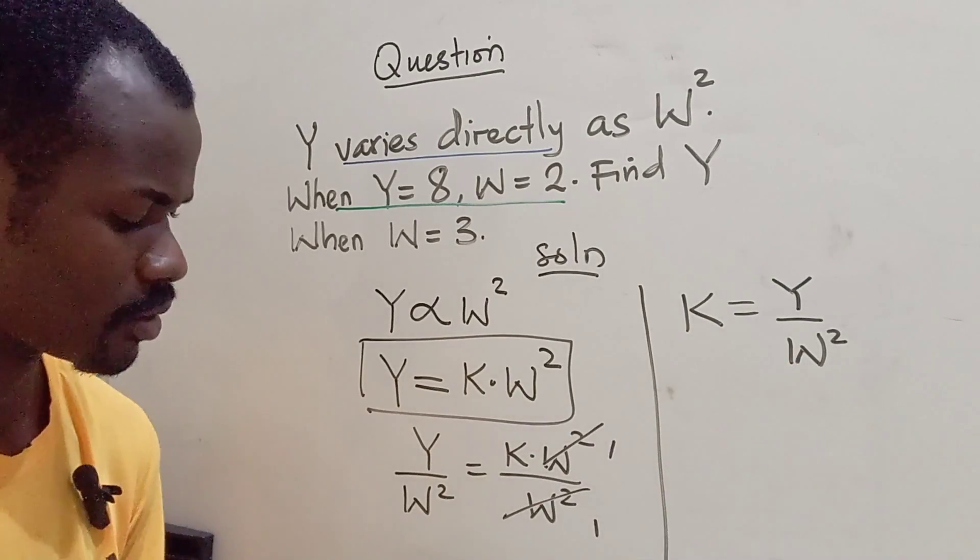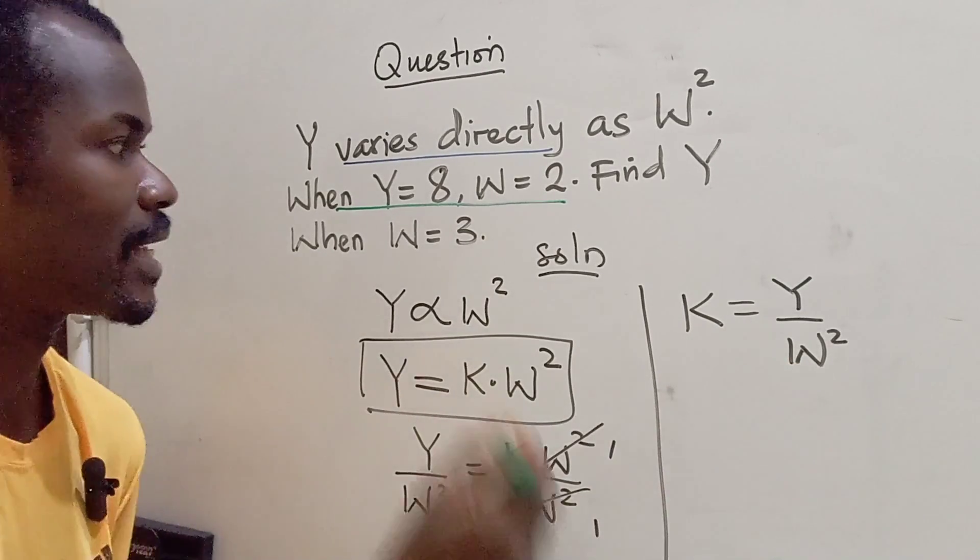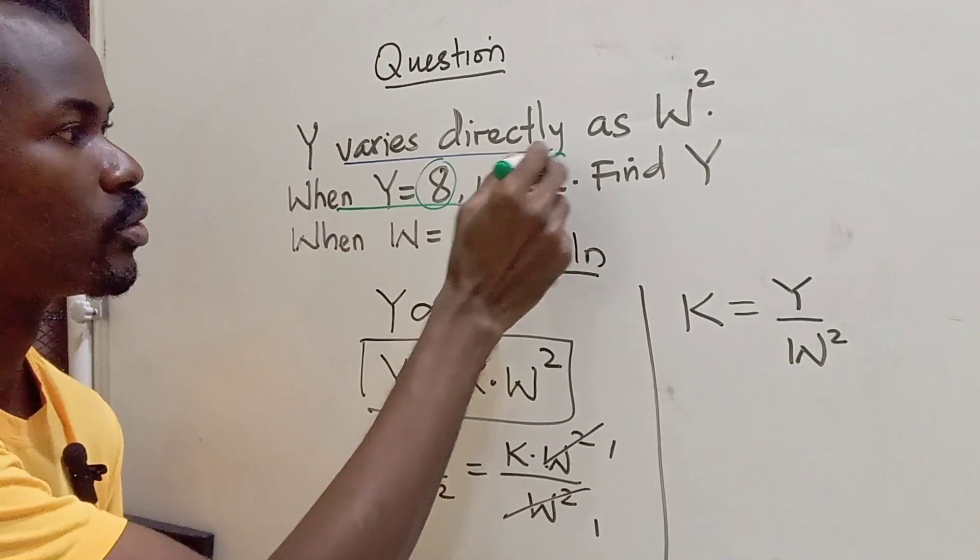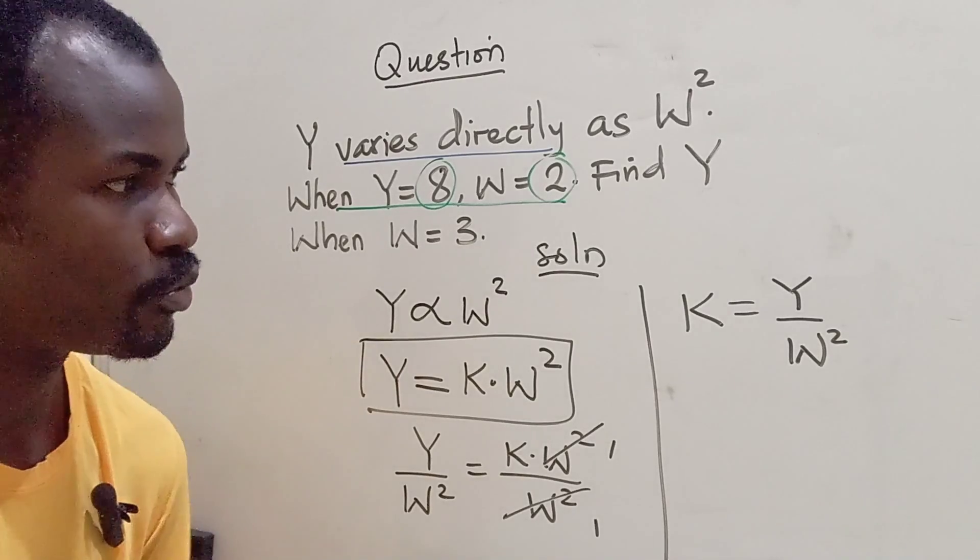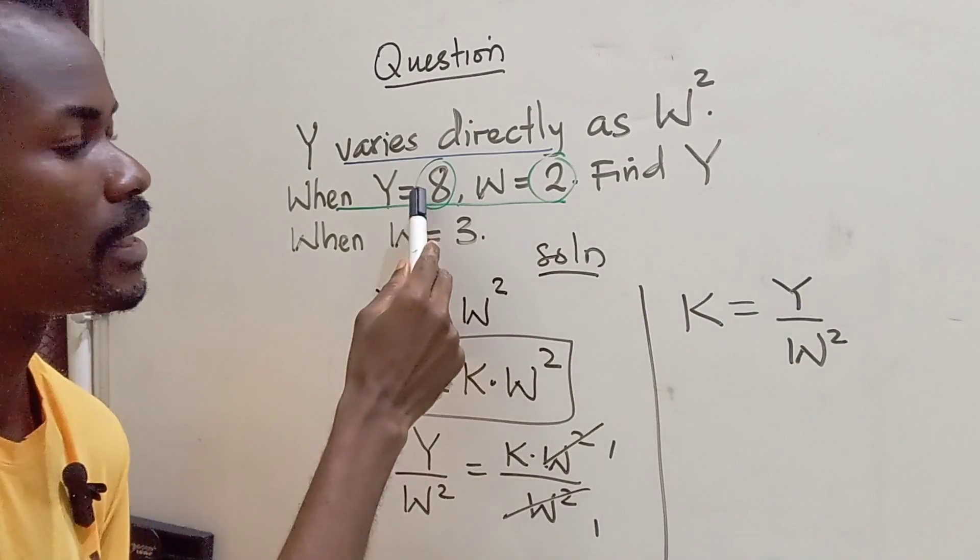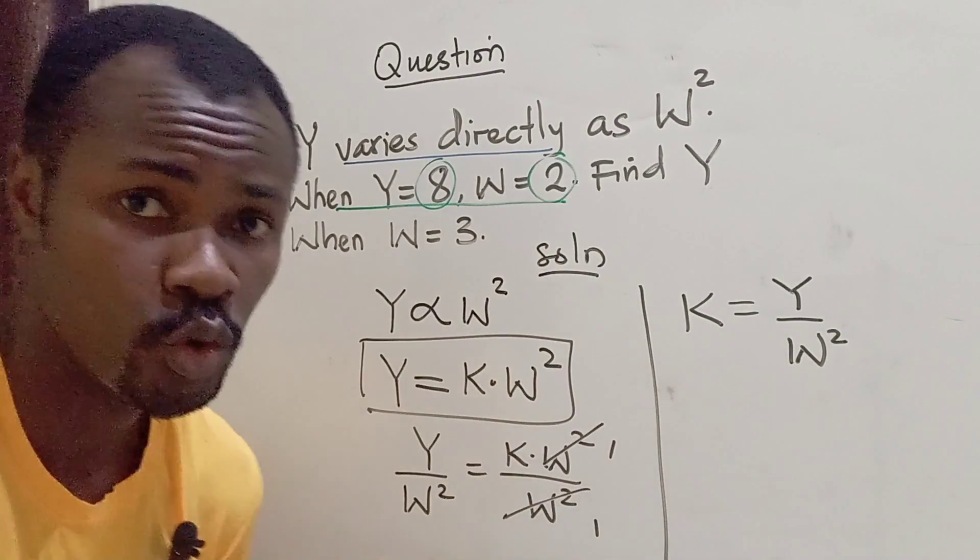Now with this, we can now substitute. We can now use this line to be able to find K. So we are going to include Y as 8 and W as 2.